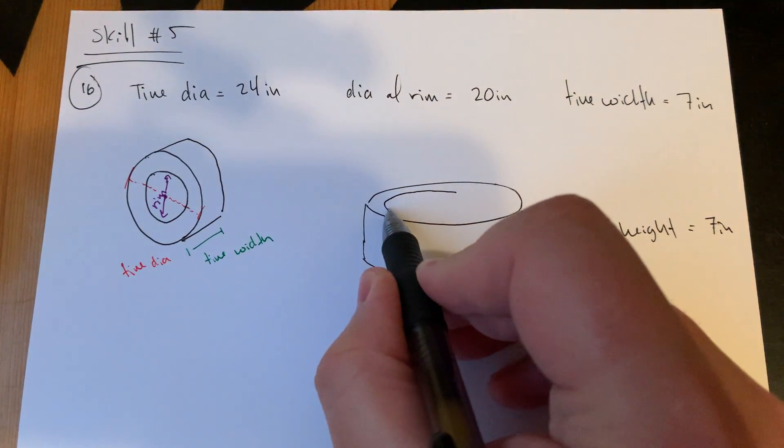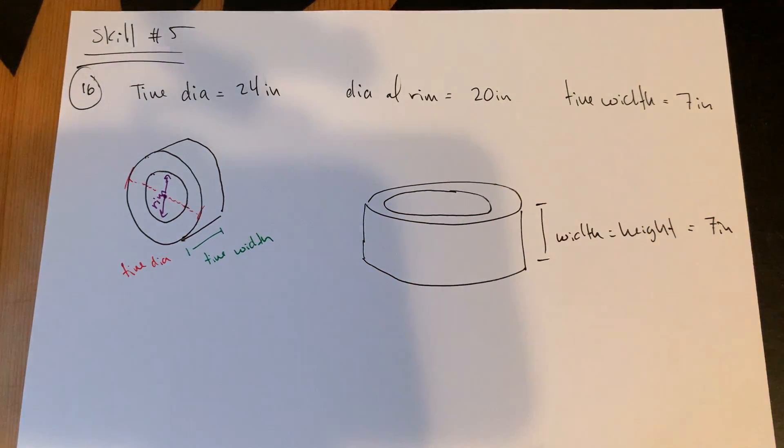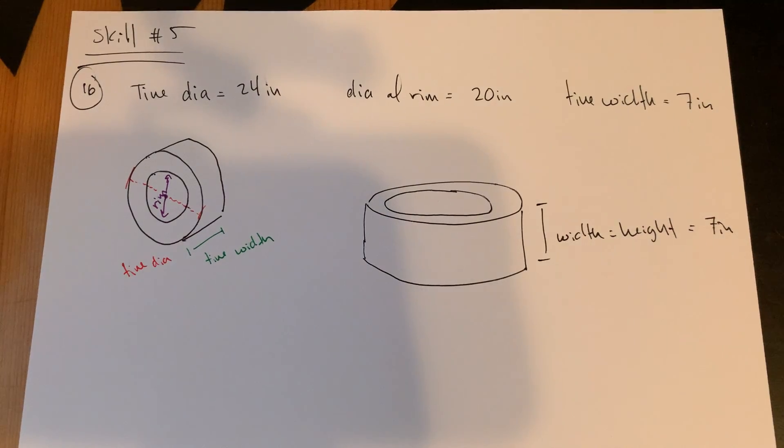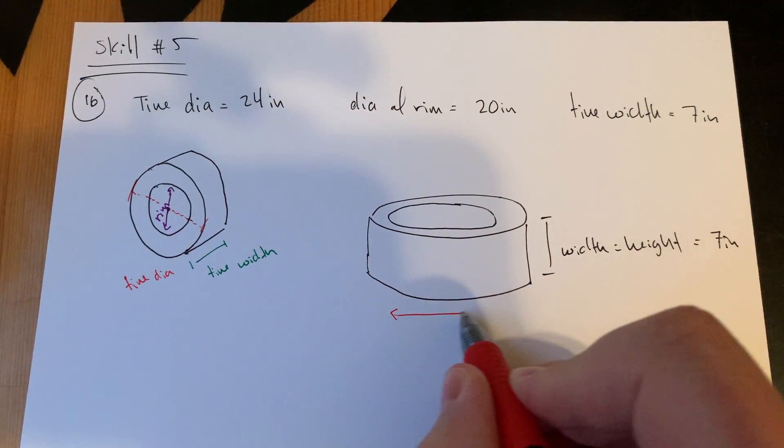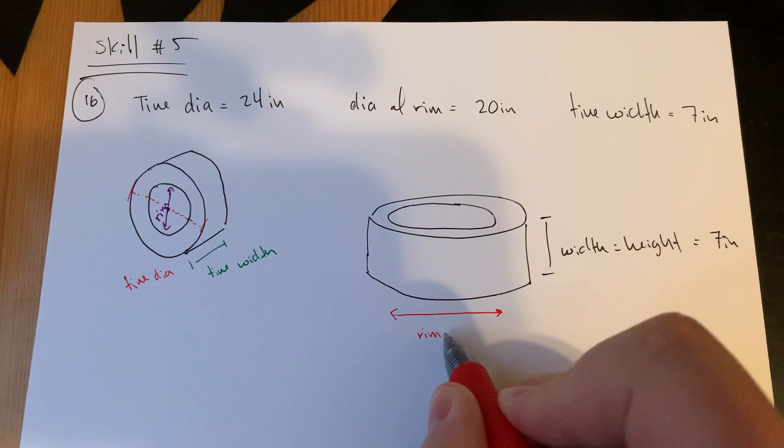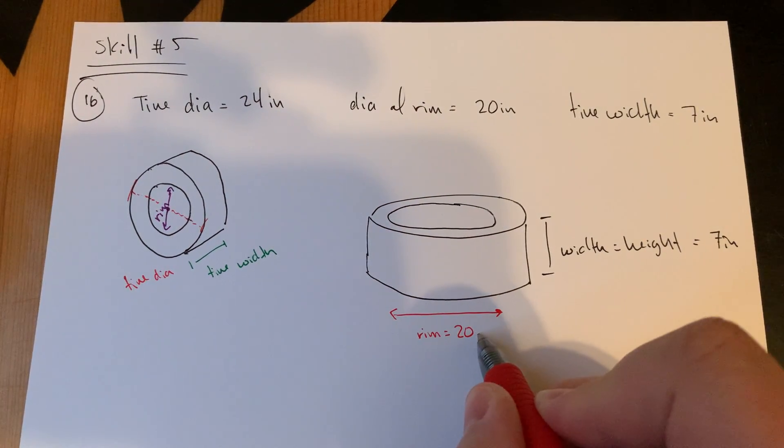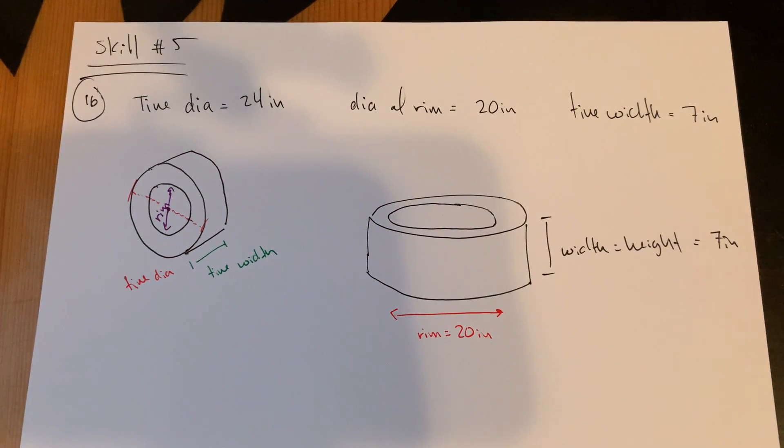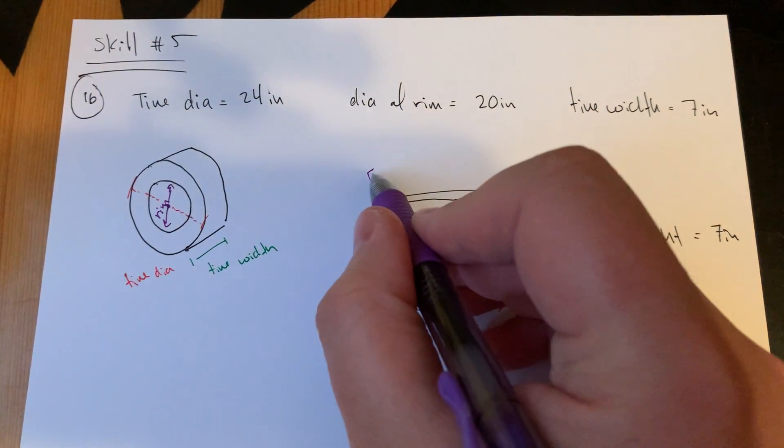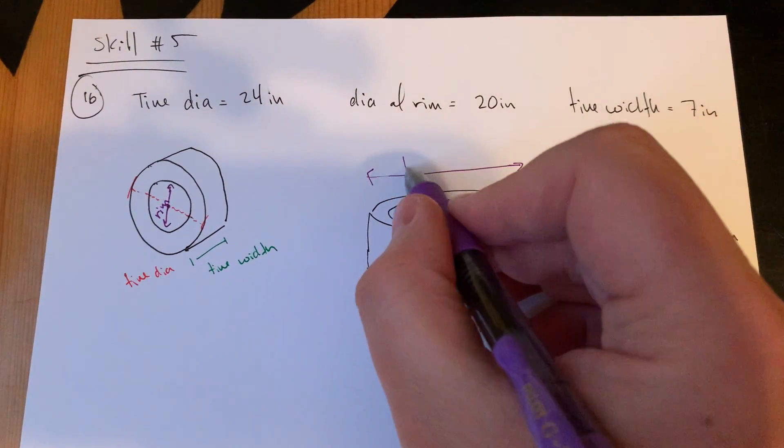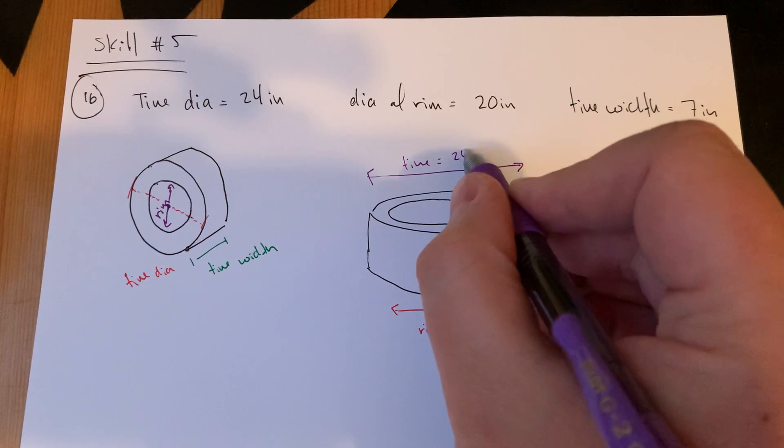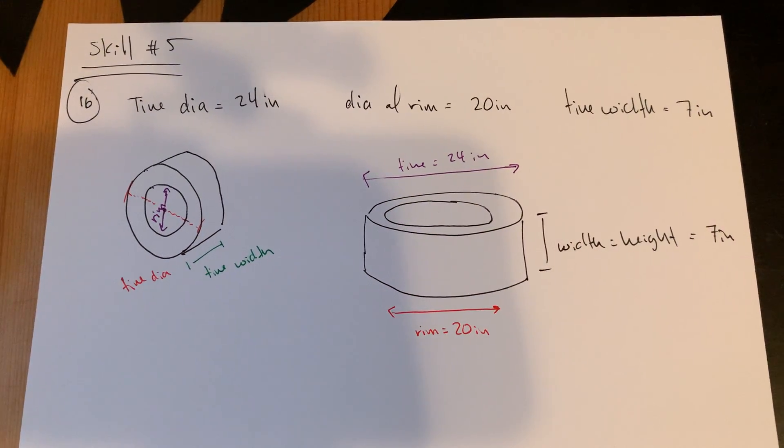Here's my tire. So the width of the tire would essentially be the height of this if we're thinking of it in terms of being a cylinder. I've maybe made this just a little tight. So I've got this rim diameter, which is 20 inches, this kind of inner diameter.